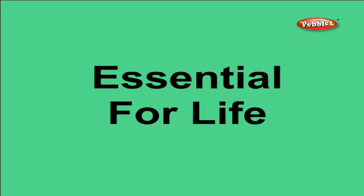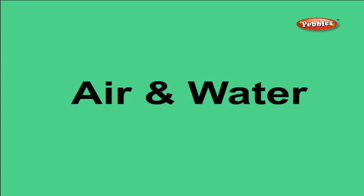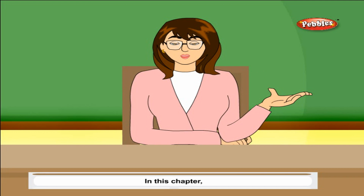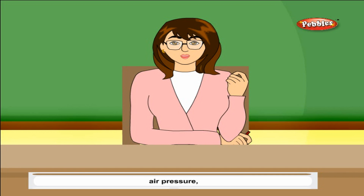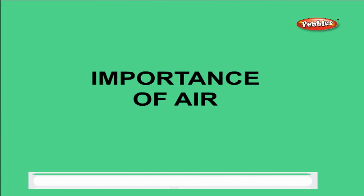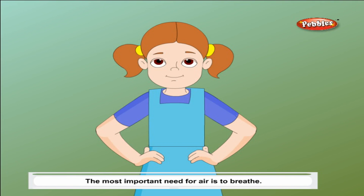Essential for life: air and water. In this chapter, you will learn about the importance of air, what air is made up of, properties of air, air pressure, water, methods of removing impurities present in water.